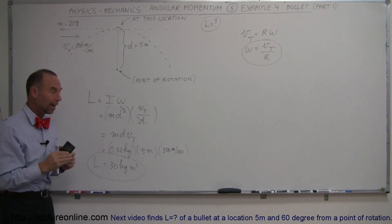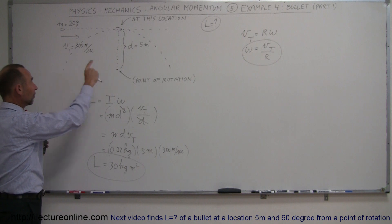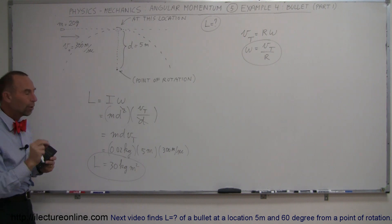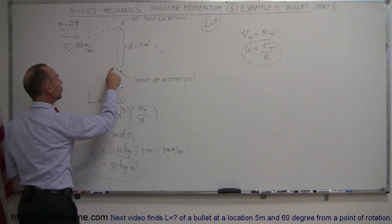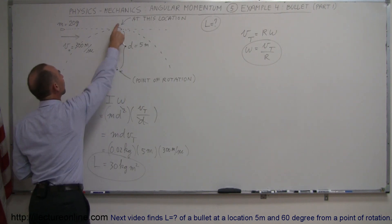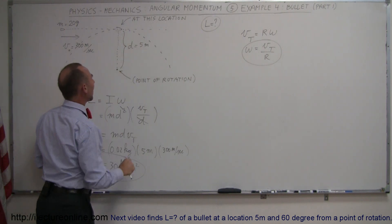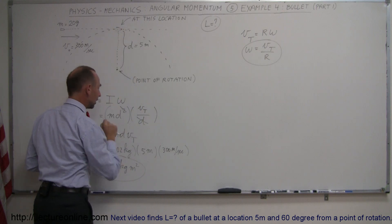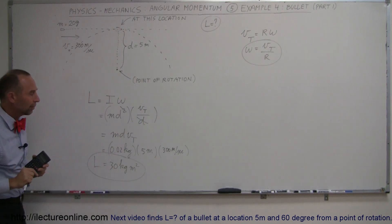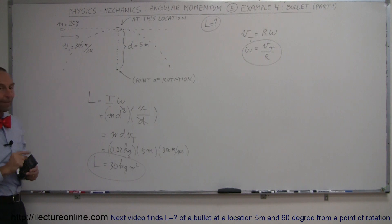But at least at this point, you understand now how you can take an object that's traveling in a straight line path and you can find its equivalent angular momentum by assuming a point of rotation perpendicular to the travel of its path. When it reaches that point, you can calculate its angular momentum at that time. And that's how you do that.